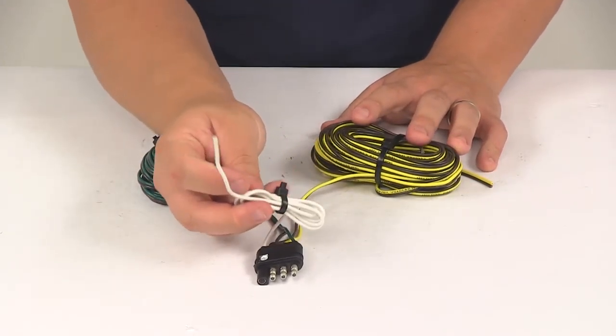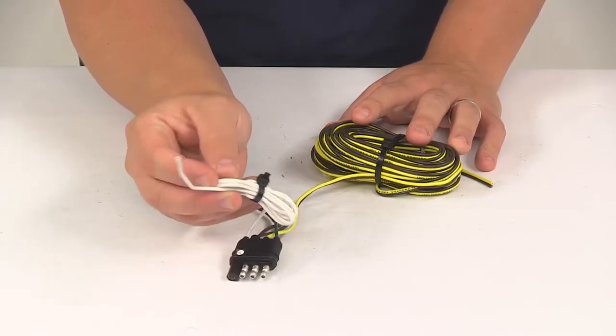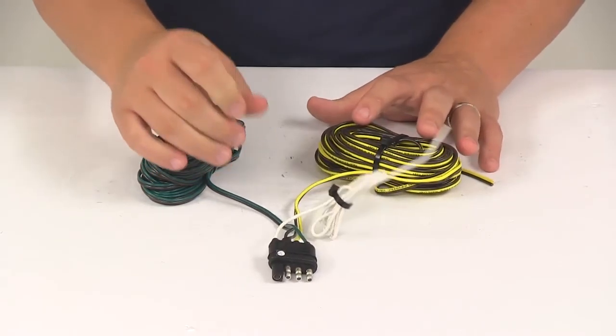The unit's also going to feature a white ground wire that's included to get grounded to a nice clean metal surface on the trailer frame.